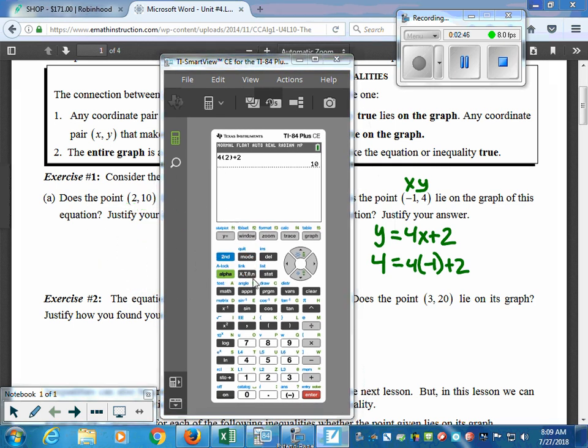Now, for part B, put in the right expression. 4(negative 1) plus 2. And I get negative 2. So, for this case, 4 does not equal negative 2, which means that's a no. It does not lie on the graph.